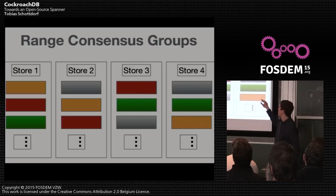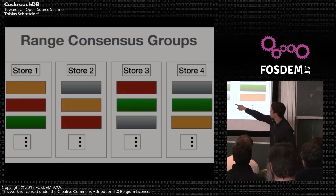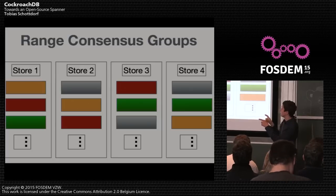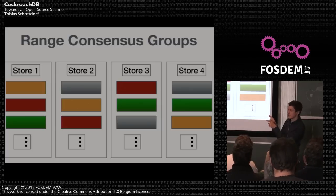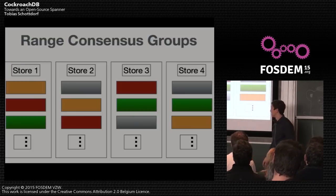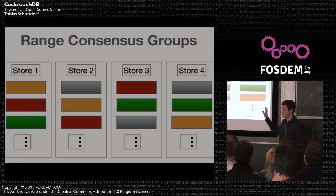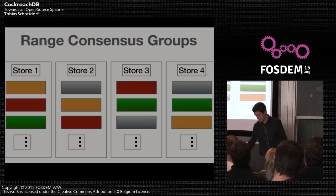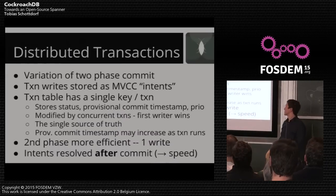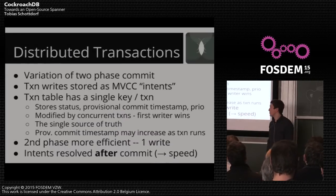Here's a picture to illustrate the architecture. Each store here is a hard drive in one of the servers. The colored units are ranges, each representing about 64 megabytes of key-value pairs. We color-coded the individual consensus groups — so the red ones on store one, store two, and store three are actually a logical unit: they strive to hold the same data at all times and form a Raft consensus group. In reality, of course, you have millions of these consensus groups.